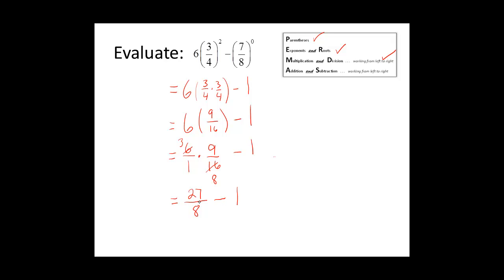Notice we have 27 eighths minus 1. We need to write this as an improper fraction, and we can write that as 1 over 1. So now we need to find a common denominator in order to subtract. The common denominator of 8 and 1 would be 8.